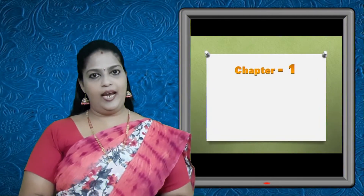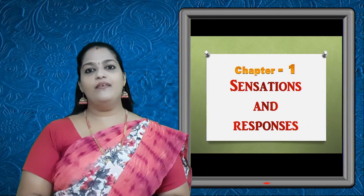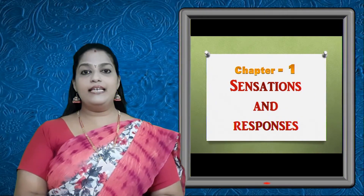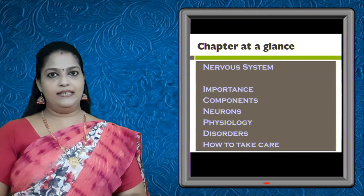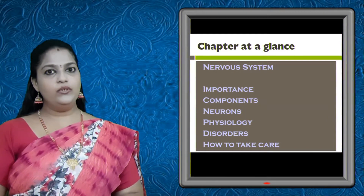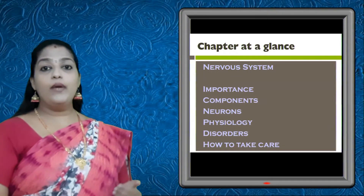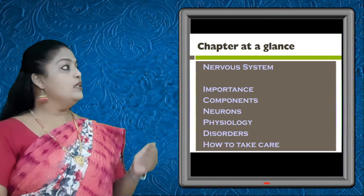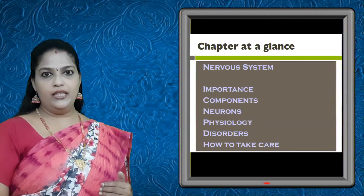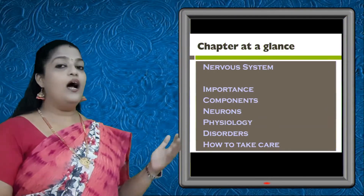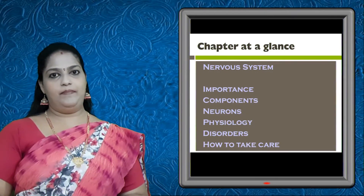Moving to our first chapter: Sensation and Responses. In this chapter we are going to discuss the following points: the importance of the nervous system, the various components of the nervous system, the neuron structure and physiology, the various disorders related to the nervous system, and finally how to take care of the nervous system.